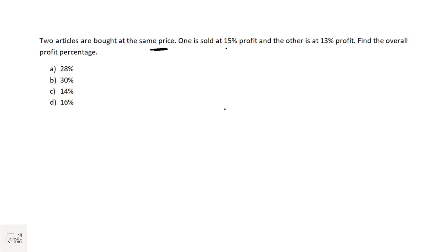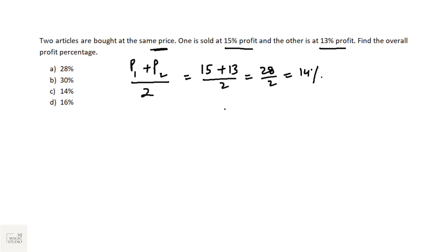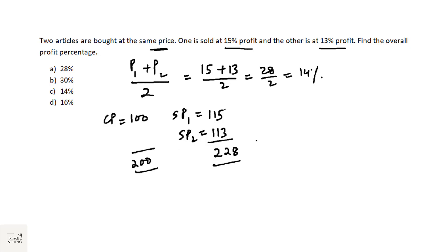Two articles are bought at the same price; one is sold at 15% profit and the other at 13% profit. Find the overall profit percentage. When cost prices are equal, the overall profit is simply the average: (15 + 13)/2 = 14%. Alternatively, if cost price is 100 each, total cost = 200, total selling price = 228, profit = 28 on 200 = 14%. Answer: option C, 14%.